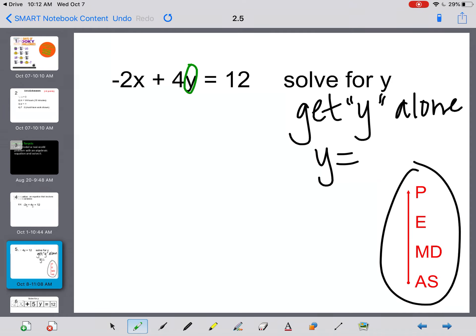What I always do first is I find out what letter I need to get by itself, and I circle it, just so that I remember that's my goal. That's what I want to get alone. Then I make my train tracks, and then I'm going to start moving things. I want to get things away from that letter y to the other side of the equals sign, starting with adding and subtracting.